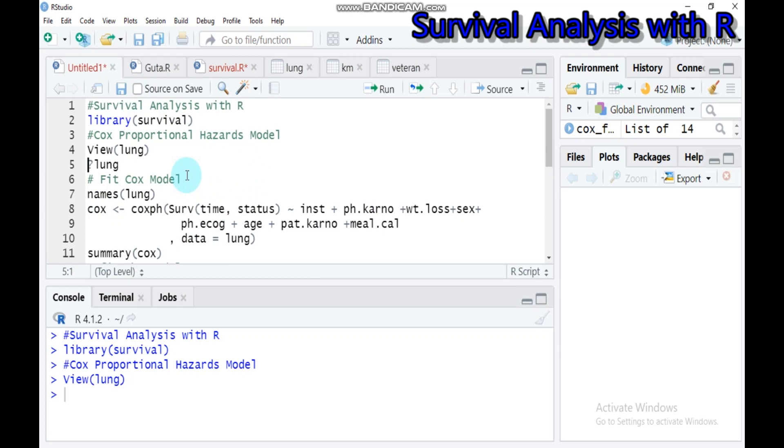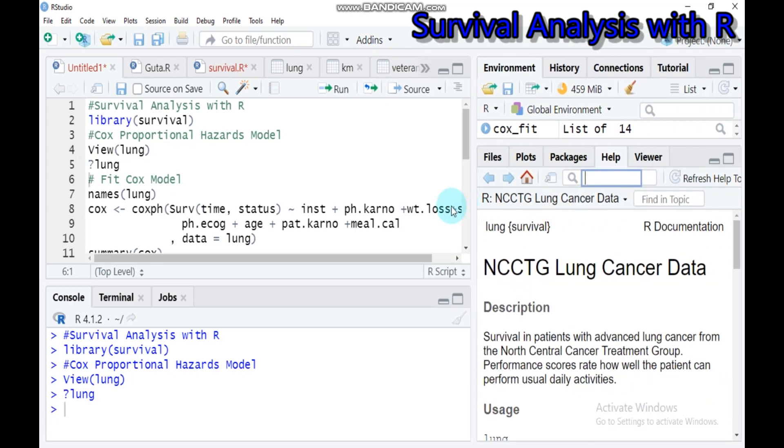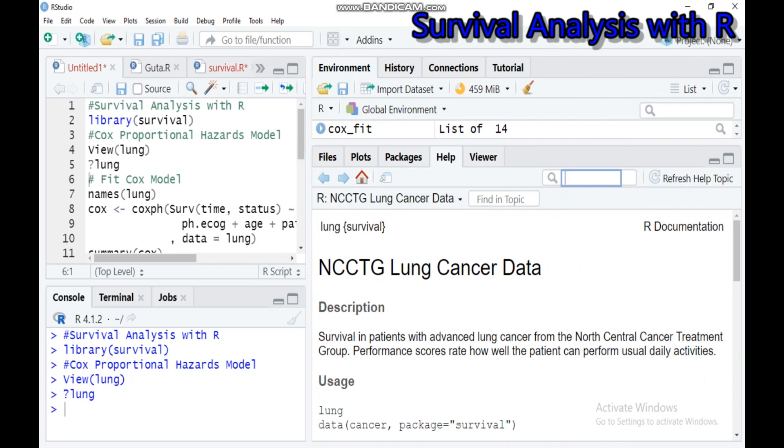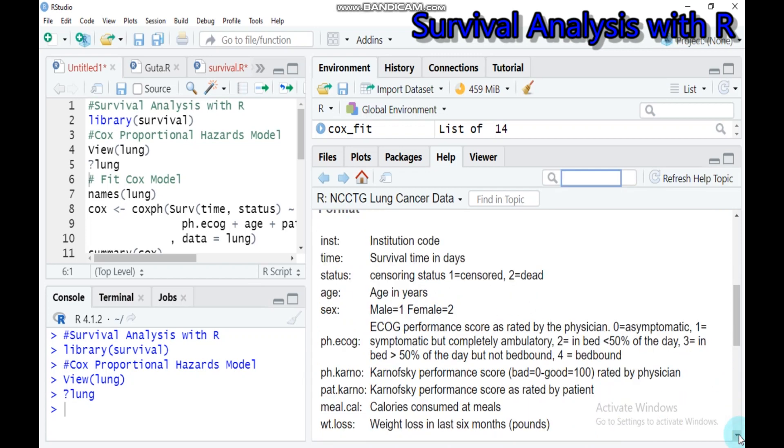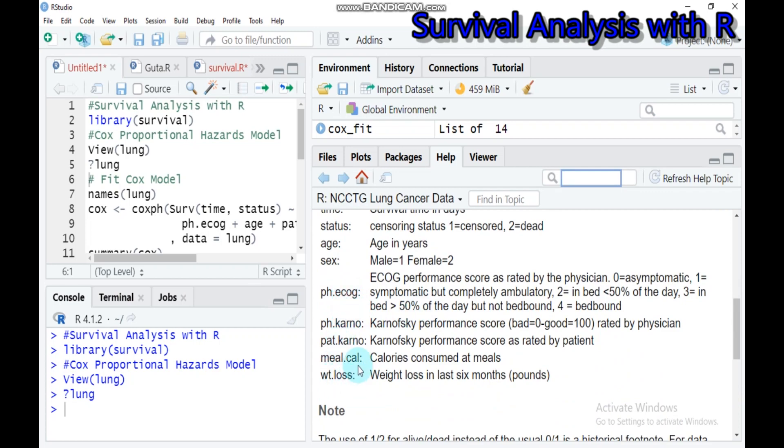If you want to know about your data frame, you have to type the question mark and write the data name. It will give you detailed information in the bottom right side of RStudio. Here is the lung cancer data. This indicates the institution code, the time in survival times in days, censoring status which is 1 for censored and 2 for dead, age in years, sex where male equals 1 and female equals 2.